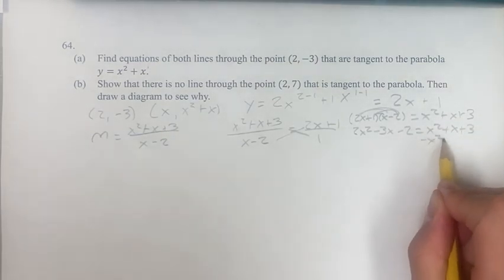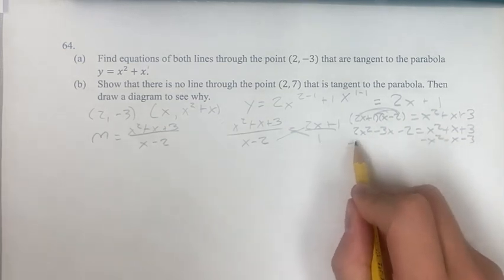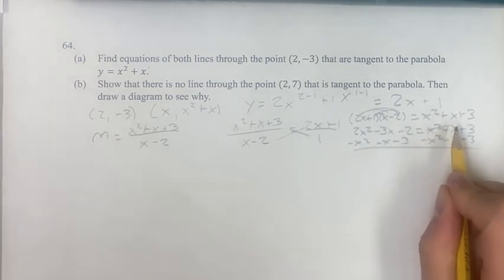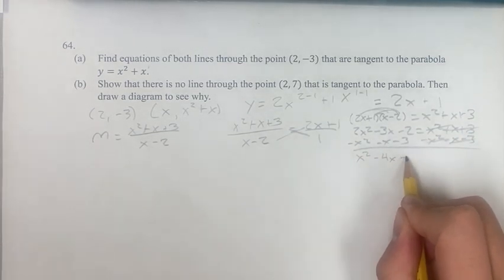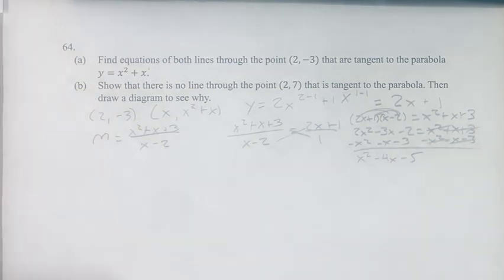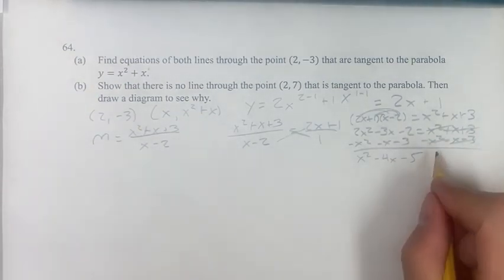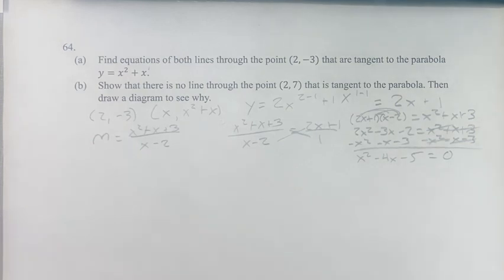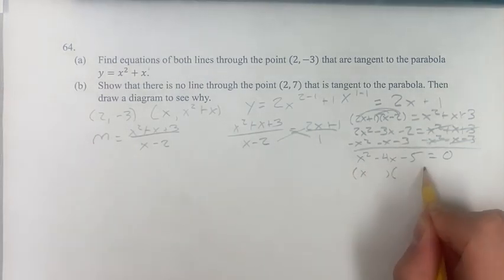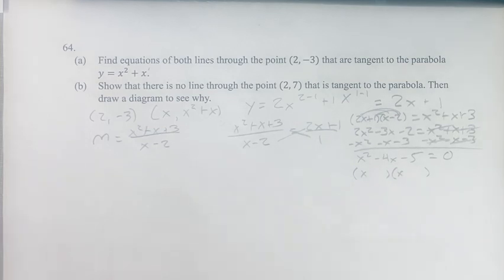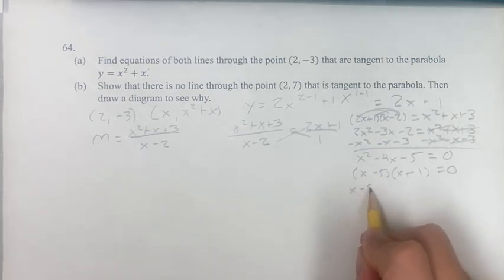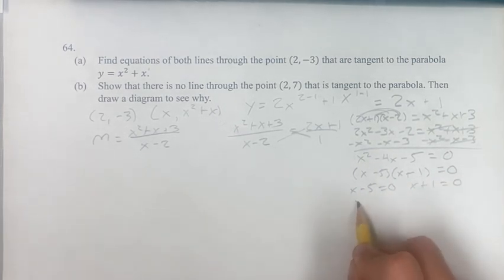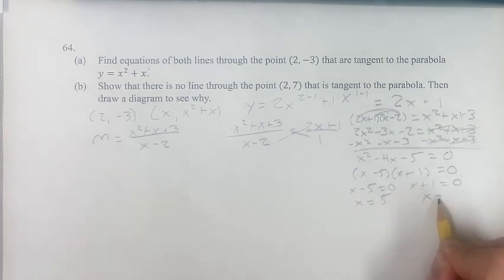From here, if we bring everything over to one side, we get x squared minus 4x minus 5 equals 0. This is pretty easy to factor — we need multiples of negative 5 that add to negative 4, which is negative 5 and positive 1. Therefore x minus 5 equals 0 or x plus 1 equals 0, so x equals 5 or x equals negative 1.